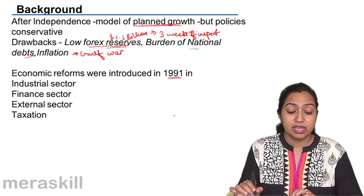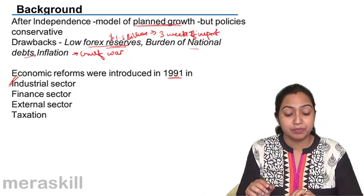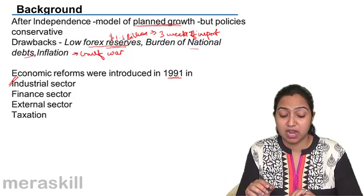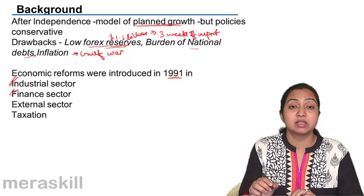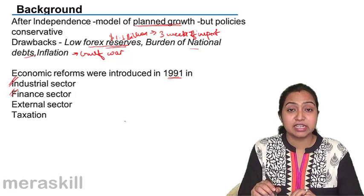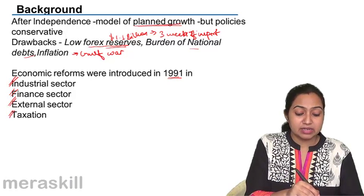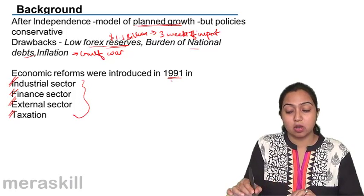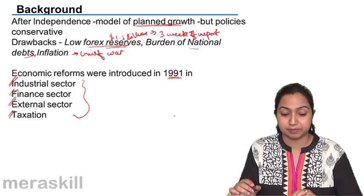Economic reforms were introduced in the industrial sector — that is, the manufacturing sector — in which manufacturing had been very regulated and required a lot of licenses. Reforms were also introduced in the finance sector, which means the banking and insurance sector; the external sector, which means the foreign trade, export, and import sector; and taxation, which is the main source of income for the government. So, in all these sectors, economic reforms were introduced in the year 1991.